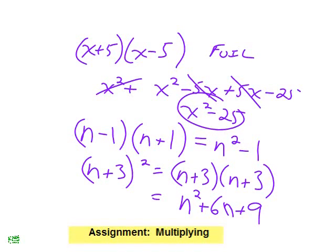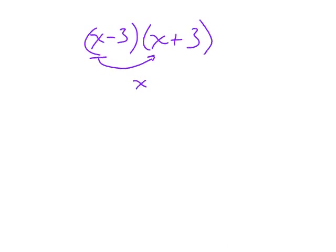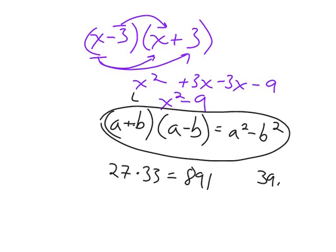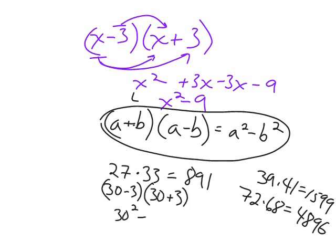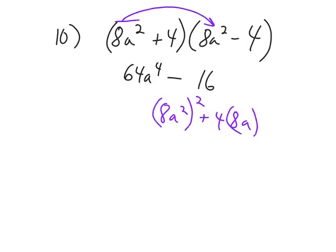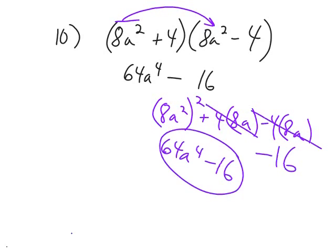Here's some practice multiplying binomials — two factors multiplied together. Notice the neat pattern: anytime you have (a plus b)(a minus b), the ab terms cancel out and you're just left with a squared minus b squared. And here's a fun party trick: 27 times 33 equals 891 in your head. So 29 times 31 is obviously 899. You can get lots of fun party tricks with these things.